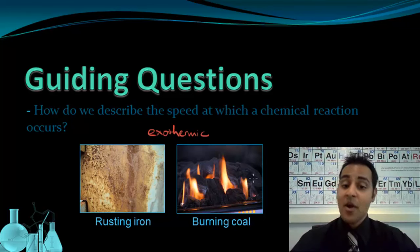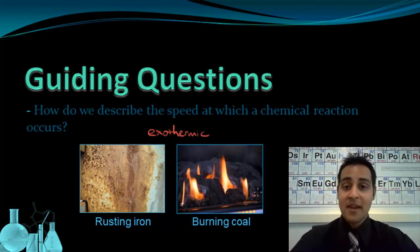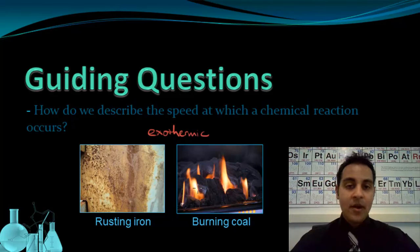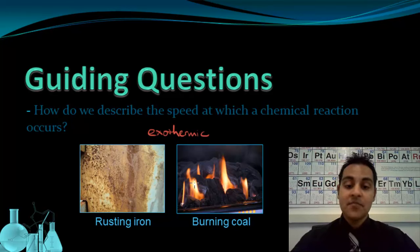For the burning coal, that probably makes sense — you probably would not want to stick your hand into burning coal because you know that would be pretty painful. But you probably wouldn't hesitate to touch a piece of iron that was rusting. In fact, you really can't even measure the temperature change of the iron as it rusts, even though the rusting process is releasing heat. If they both release heat, why is one harmful and the other not?